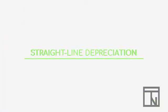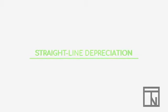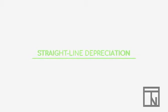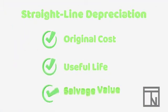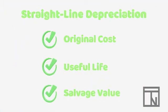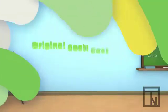Although there are many different methods for recording depreciation, let's start Bob off with the simplest method: straight line depreciation. In order to calculate straight line depreciation, we need three basic ingredients: the original cost of the fixed asset, the estimated useful life of the asset, and the salvage value of the asset.